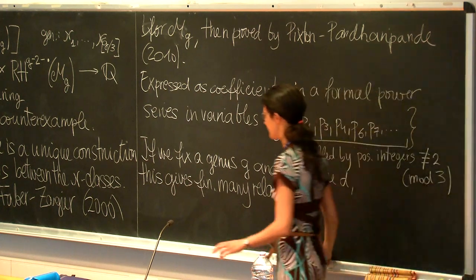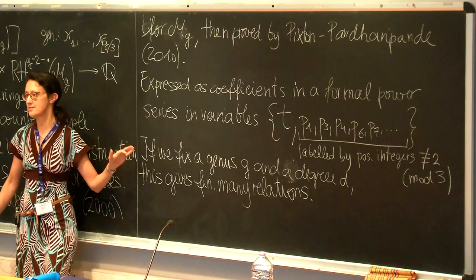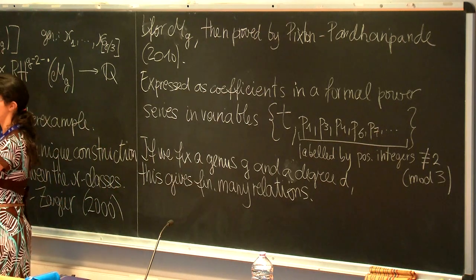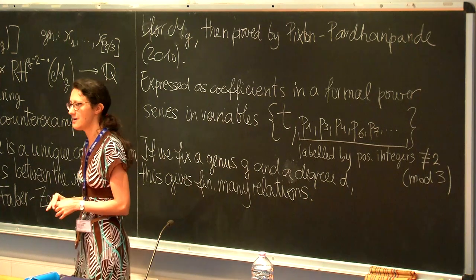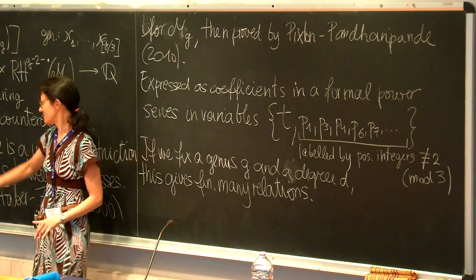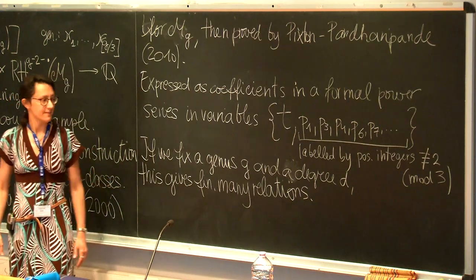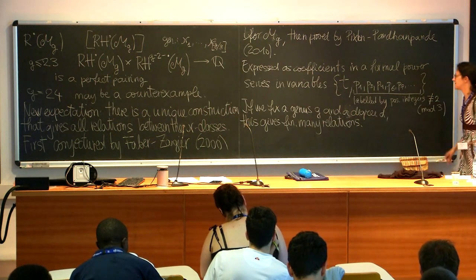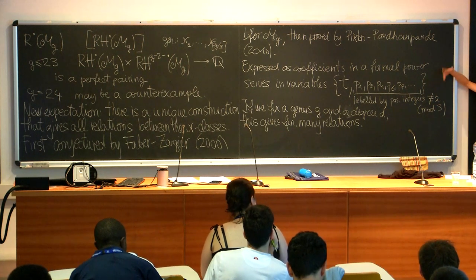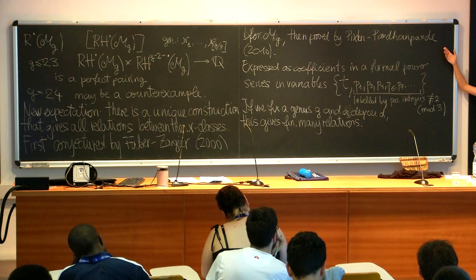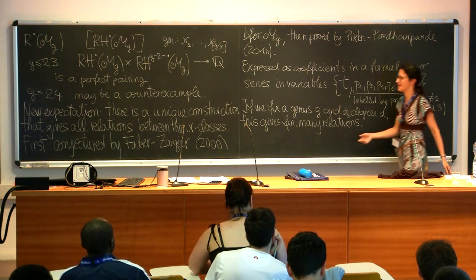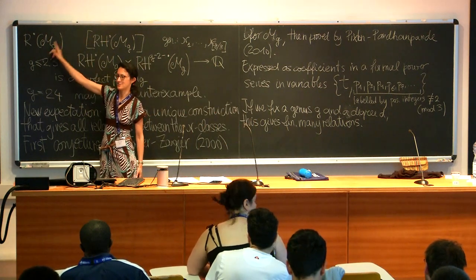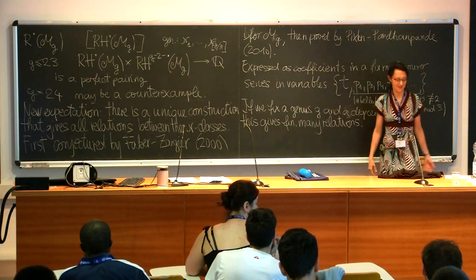Let me give two remarks. First, if these are all the relations that exist — relations describable in this way and all their multiples — this would imply that the pairing is certainly not perfect starting from g equal to 24. So somehow this expectation substitutes the previous one. Second, since this expectation holds both for Chow and for cohomology, if the same conjectural description applies to relations in both rings and they have the same generators, they are isomorphic.